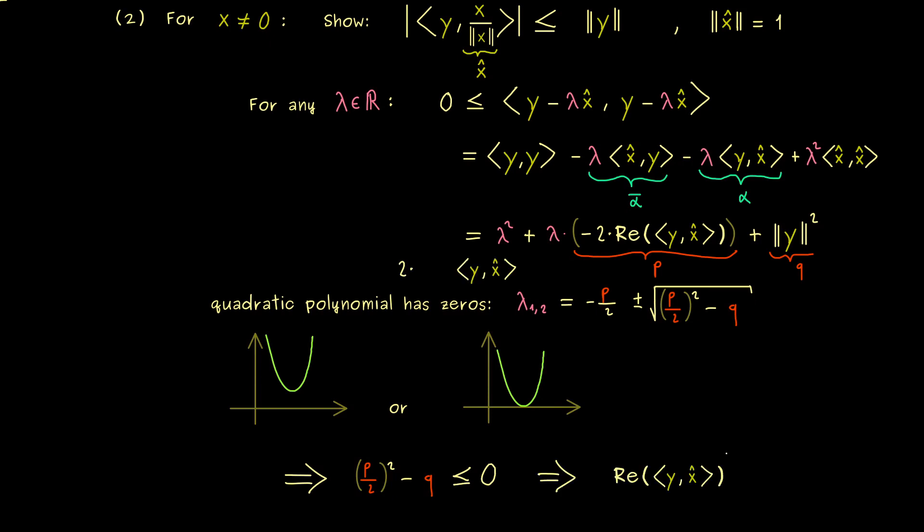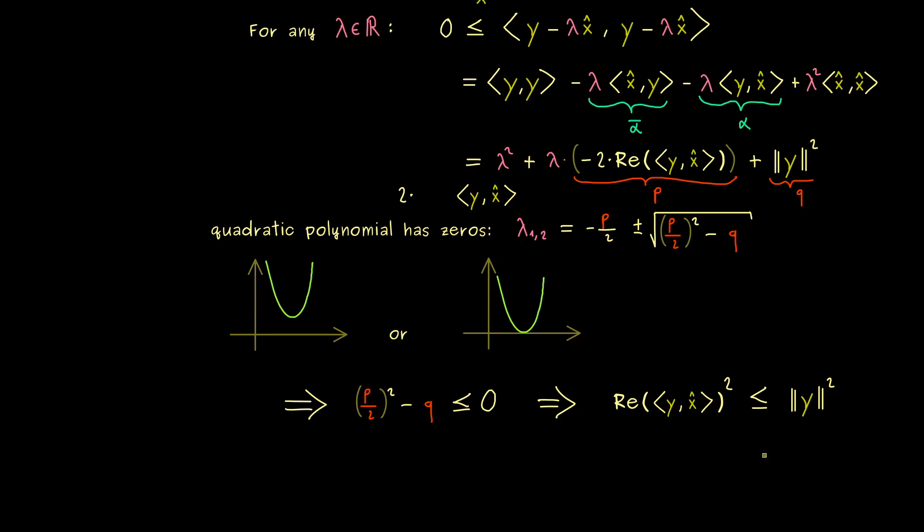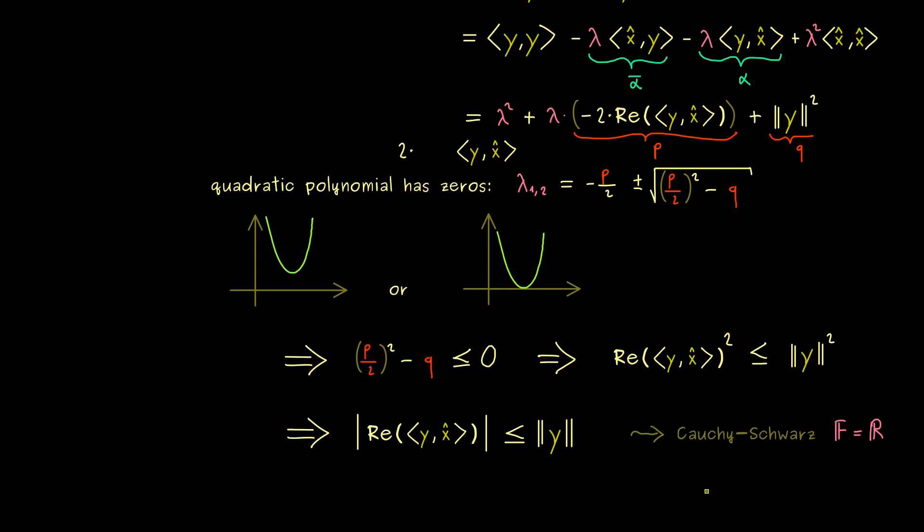And by putting in p and q we get that the real part of the inner product here squared is less or equal than the norm of y squared. And then you see in the next step we can simply take the square root on both sides. And then we get that the absolute value of this inner product is less or equal than the norm of y. And this is almost what we wanted to show because only this real part here now has to vanish. And indeed this happens if our field of scalars is given by the real numbers. So we have proven Cauchy-Schwarz for real vector spaces now.